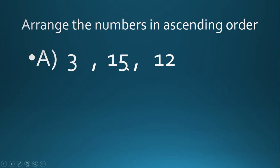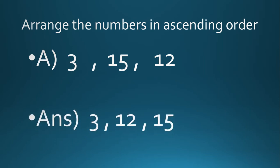Now let's compare 15 and 12. We check the tens place — the digit on the tens place is 1 for both, so 1 and 1 are equal. So we move to the third rule and check the ones place. The ones place digit is 5 for 15 and 2 for 12, which means 15 is bigger than 12. So the ascending order is: 3, then 12, then 15.